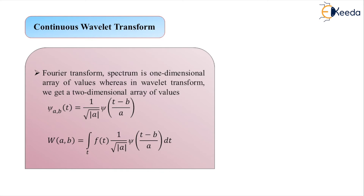Plotting the Wavelet transformation builds a picture of the similarity or correlation between the Wavelet at various scales and locations with the signal to be processed. Comparing this to the Fourier transformation: the Fourier transform produces a spectrum, which is a one-dimensional array of values in the frequency domain. In contrast, the Wavelet transformation produces a two-dimensional array of values — that is the very important point as we switch from Fourier theory to Wavelet theory.